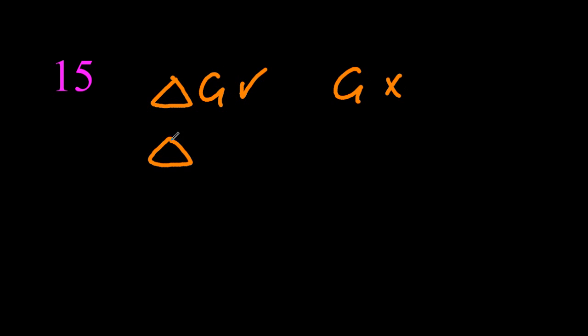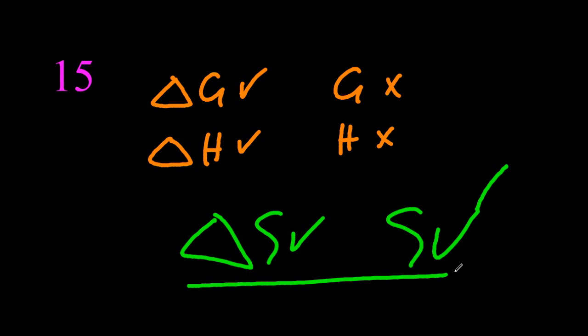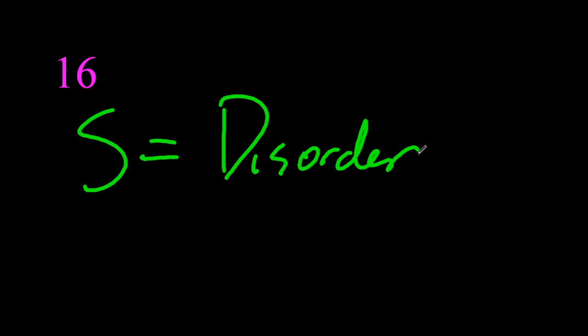Don't forget the state symbols in the Born Haber equation are important or it's wrong. Delta G, you can't measure G. Delta H, yes, but you can't measure H. But you can measure S and delta S. And S is, of course, disorder.